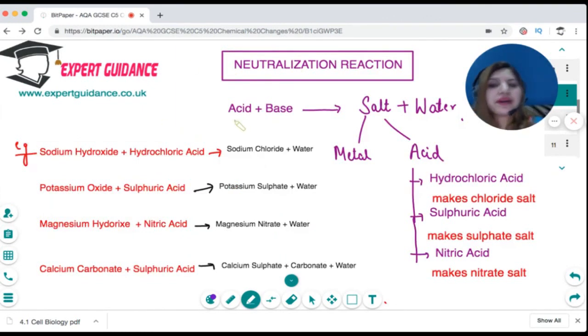Now let's look at reactions of acids and bases. Acids and bases form salt and water, and this is a neutralization reaction. But you should know how to name the salt. Each salt has two components: a metal and an acid.